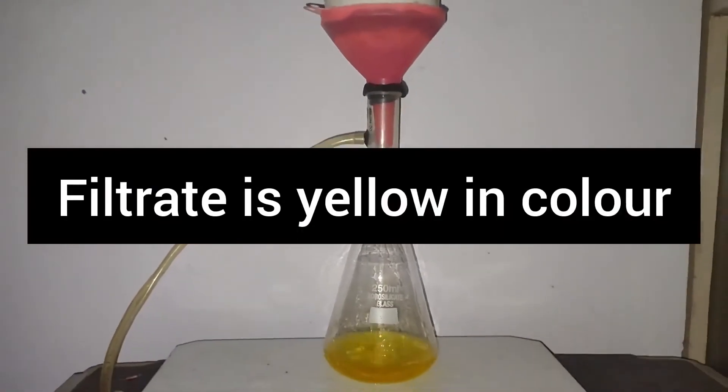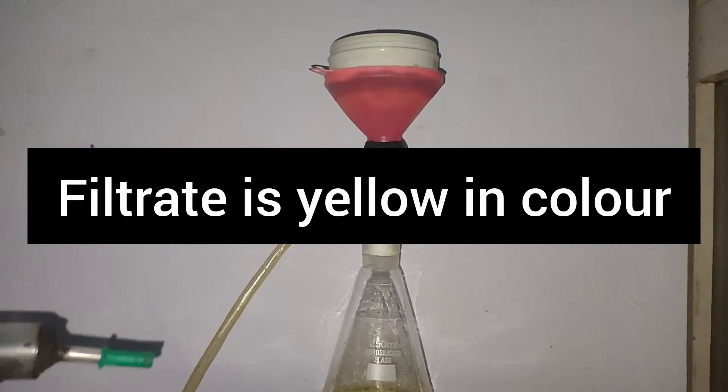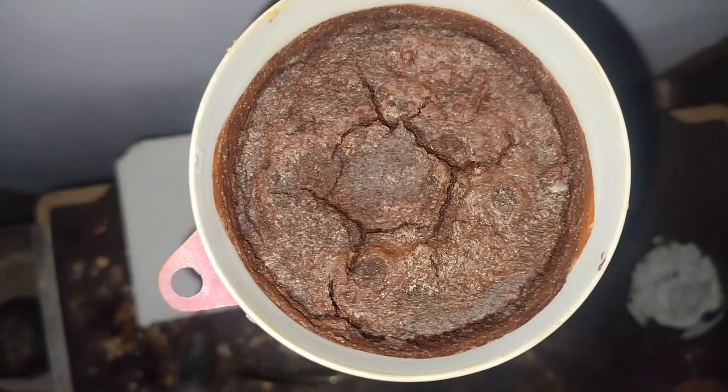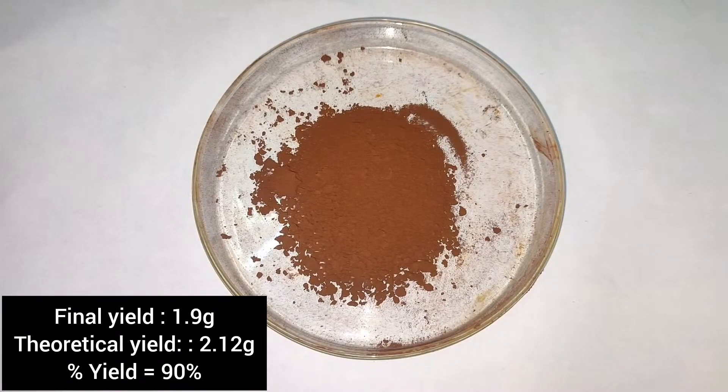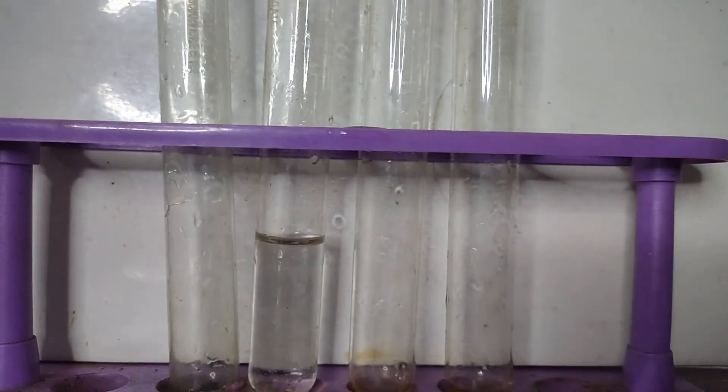The precipitate is washed a couple of times with distilled water, and the filtrate is yellow in color. Here is the dye. After drying, the final yield came out to be 1.9g which corresponds to 90% yield.